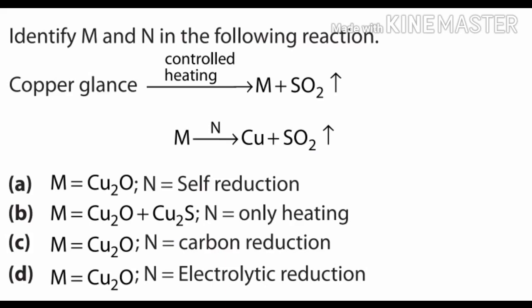Next question: a sequence of reactions is given — copper glance gives M + SO₂, and M gives metal + SO₂. What is M, the product of the first reaction, and what is N, the condition provided for converting to metallic copper? Read every option carefully and check your answer.